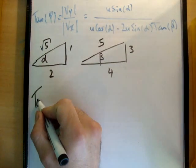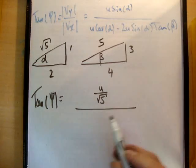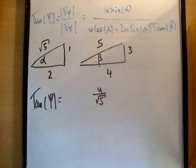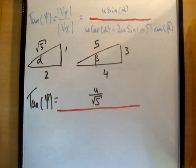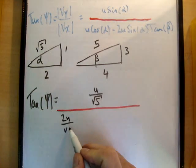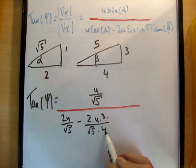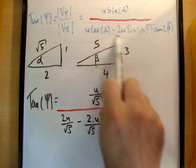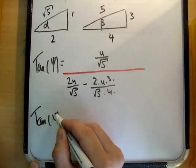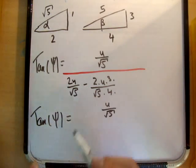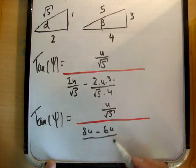So let's just plug this into what we have. We get tan psi equals u over root 5 over 2u over root 5, minus 2 times u times 3 over root 5 times 4. So that's just plugging in these values for sine and cosine and tan beta in here. And let's just add this fraction here, so that will become 8u minus 6u over 4 root 5.